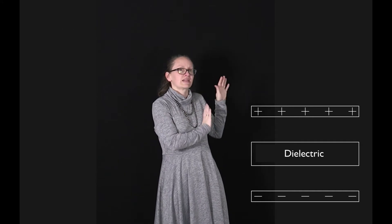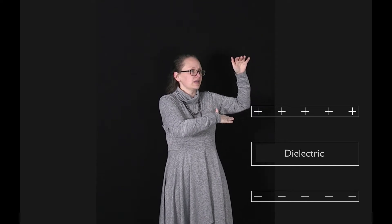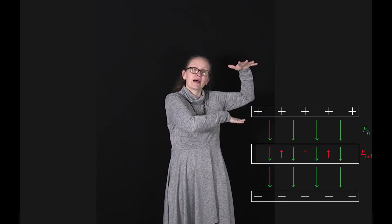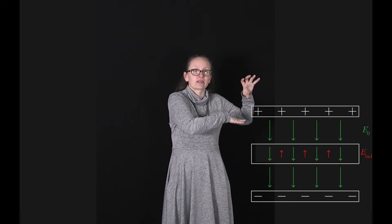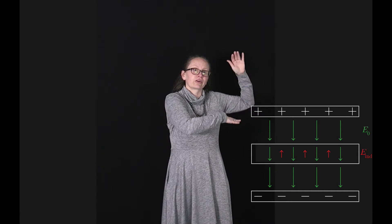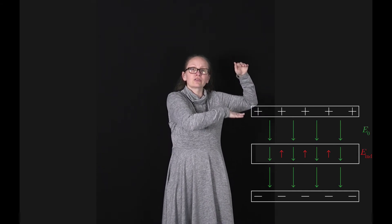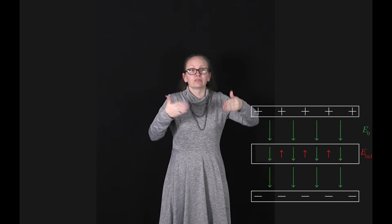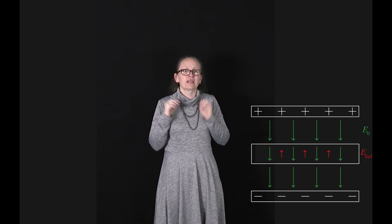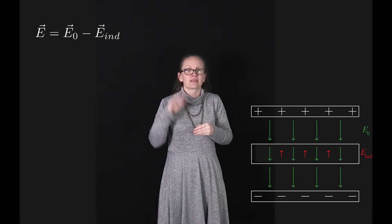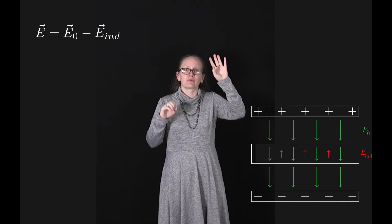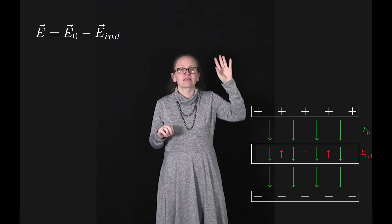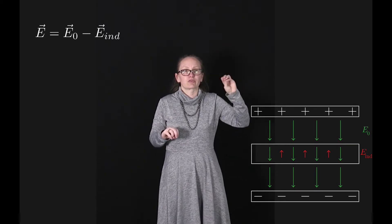Now let's consider placing our dielectric material between the two plates. The electric field which the two plates are applying is going to induce an electric field inside our dielectric. The molecules inside the dielectric are going to align with the electric field in such a way as to reduce the amount of the electric field. We can describe this with an equation: E equals E₀ minus E_induced.